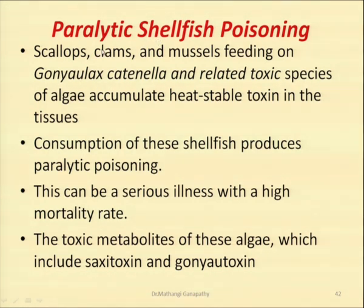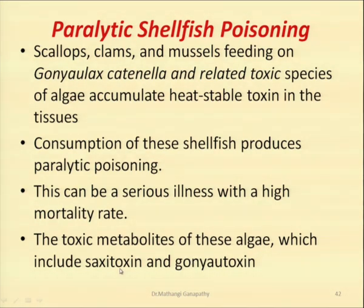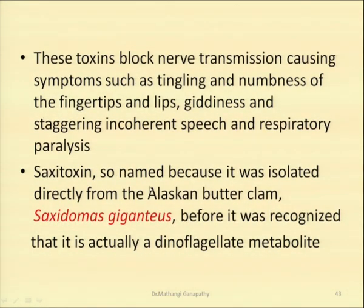The first case we are discussing is paralytic shellfish poisoning. Scallops, clams, mussels feed on Gonyaulax catenella and related toxic species of algae, and these accumulate heat-stable toxin in the tissues. Consumption of these shellfish produces paralytic poisoning, and this can be a serious illness with high mortality rate. The toxic metabolites of these algae include saxitoxin and goniotoxin. These toxins block the nerve transmission, causing symptoms like tingling and numbness of the fingertips and lips, giddiness and staggering, incoherent speech, and respiratory paralysis.